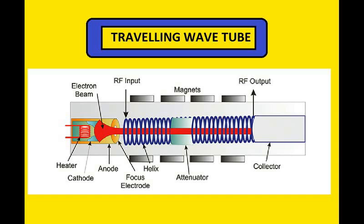In klystron the electron beam travels and the RF field remains stationary. But in TWT it makes use of distributed interaction between the electron and the RF field. To prolong this interaction, it is necessary to ensure that both are traveling in the same direction and with the same velocity. The RF field propagates with velocity equal to the velocity of light.